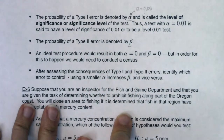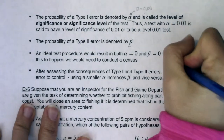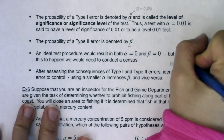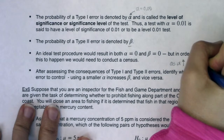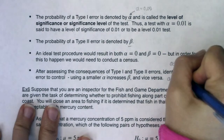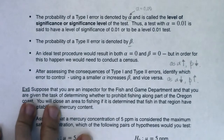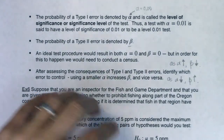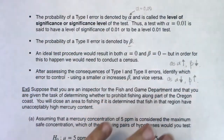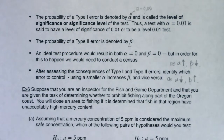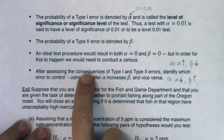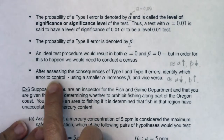As alpha goes up, beta goes down, and as alpha goes down, beta goes up. We're going to practice this idea: we'll figure out whether we want a larger alpha or a larger beta. We'll pick which set of hypotheses is correct and then figure out which error we want to control for — assessing some consequences and identifying which error to control.